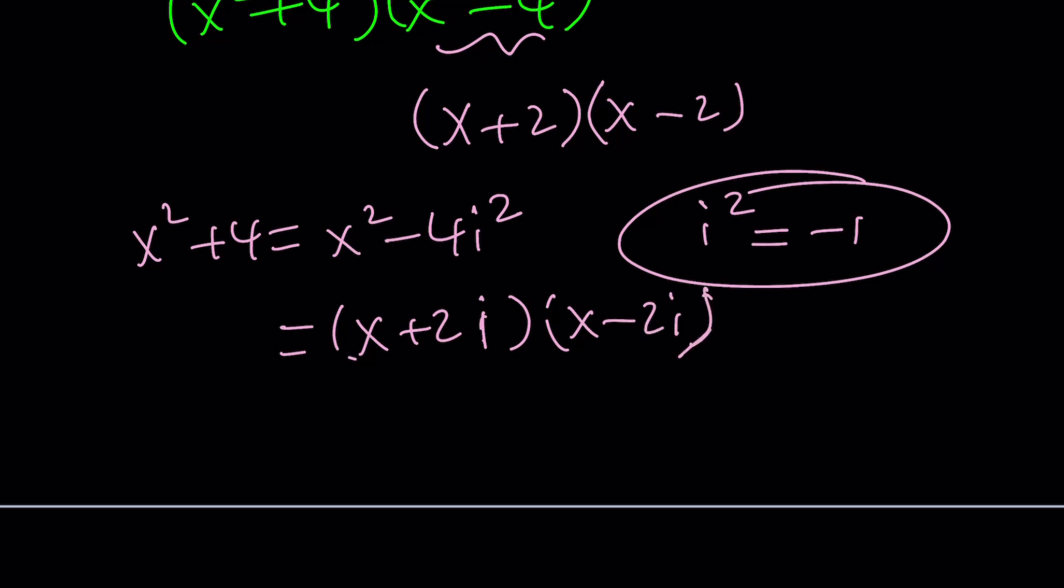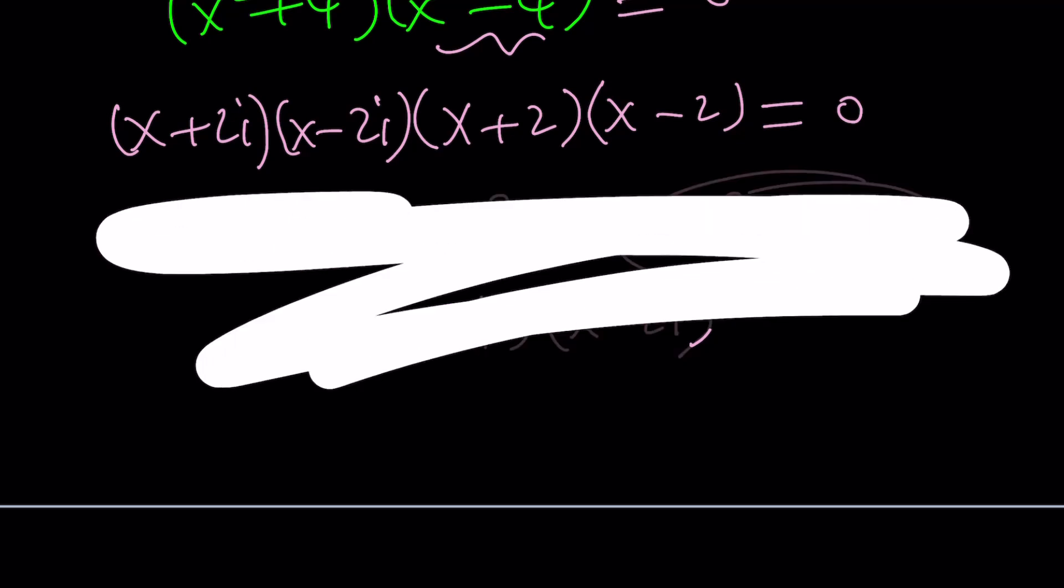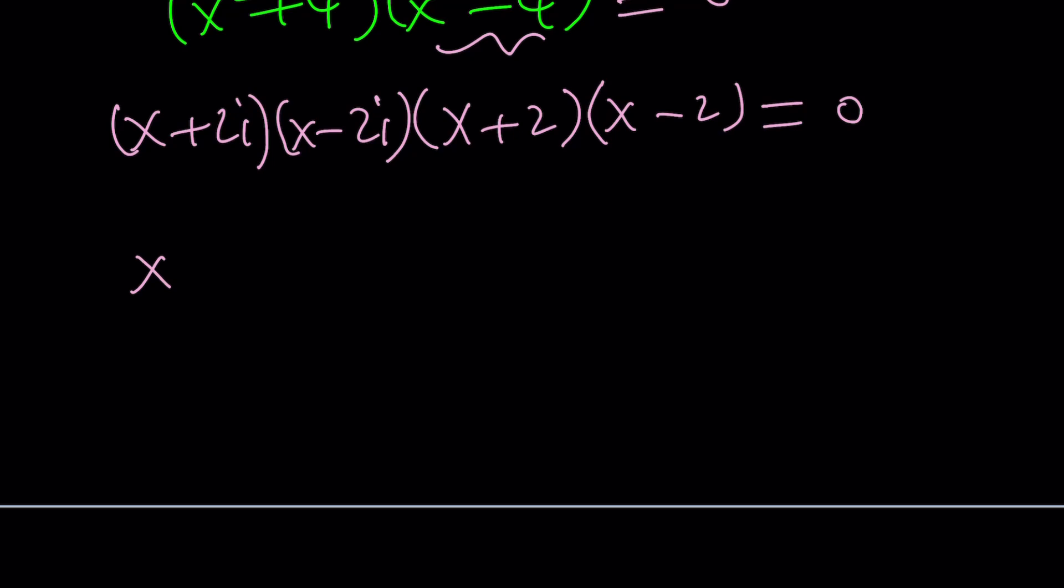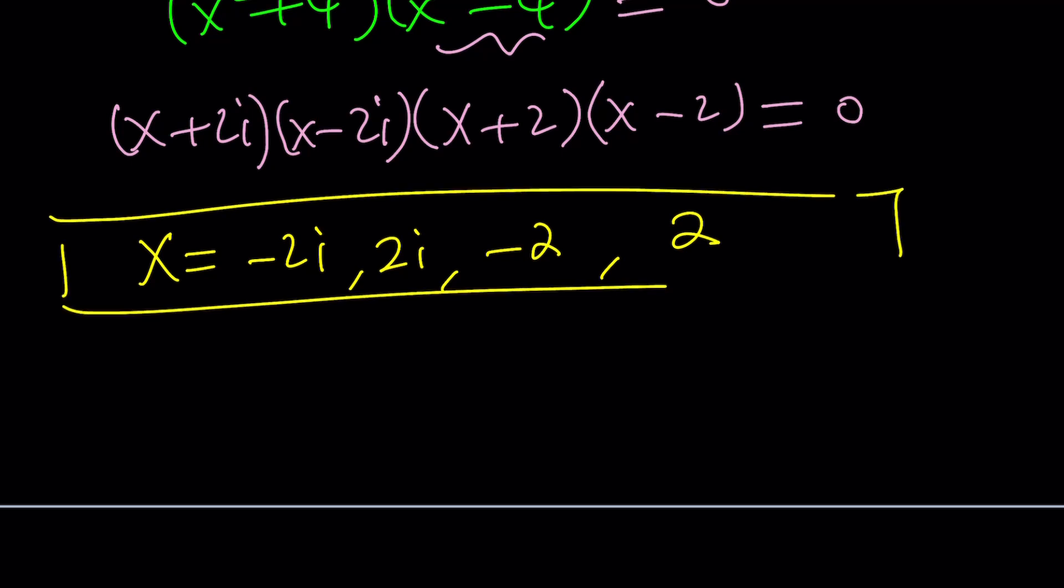So then we can go ahead and put it all together, x plus 2i and x minus 2i, and then set the whole thing equal to 0, and we get all the solutions from here. So let's go ahead and write all the solutions. What are the solutions? We have x equals negative 2i, we have x equals 2i, we have negative 2 and positive 2. So there are four solutions. They're all distinct, and it's normal because we're dealing with a quartic equation.